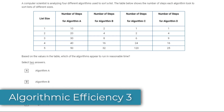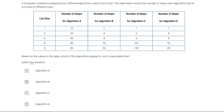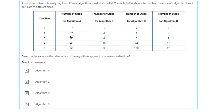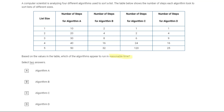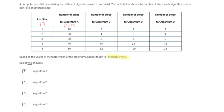Here's a tricky problem with multiple algorithms and their runtimes for different list sizes. Algorithm A shows values 10, 20, 30, 40, 50 — that's clearly 10n, which is linear. Algorithm B shows 2, 4, 8, 16, 32 — these are powers of 2. That's 2-to-the-n, which is exponential. I strongly recommend memorizing this pattern of powers of 2, because you'll see them regularly on the exam.